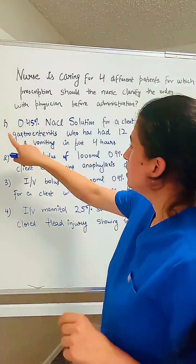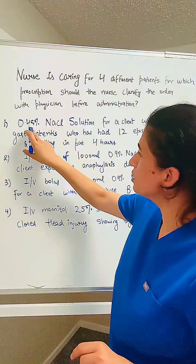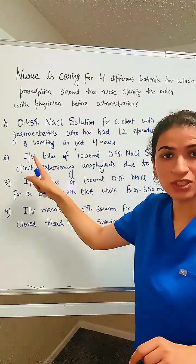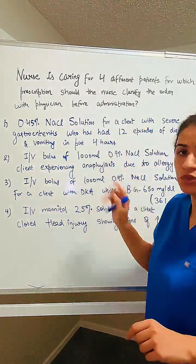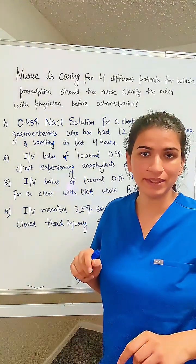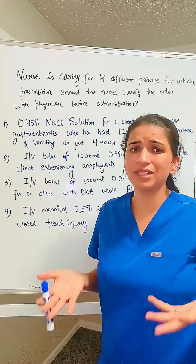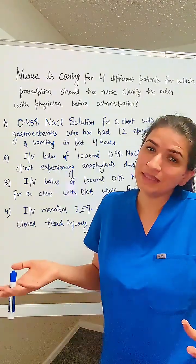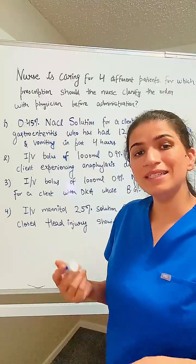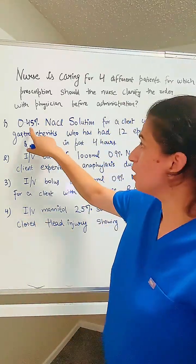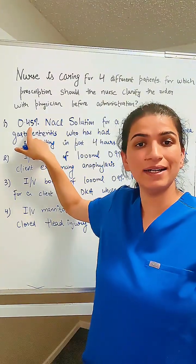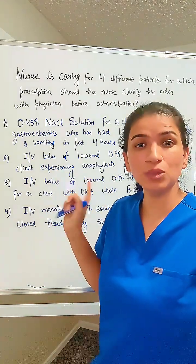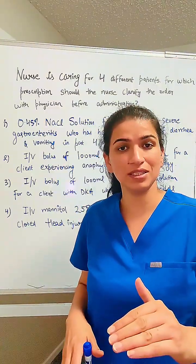Option one: 0.45% NaCl solution for a client with severe gastroenteritis who has had 12 episodes of diarrhea and vomiting in the past few hours. When someone has a lot of diarrhea and vomiting, what happens? Dehydration. This is a low number — less than 0.9 — so it's a hypotonic solution. Do you really want to give a hypotonic solution to a dehydrated patient? Hold onto this option.